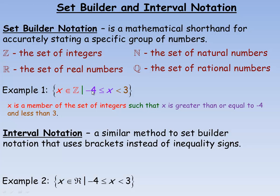After 'such that,' it's written: negative 4 is less than or equal to X, which is the same as saying X is greater than or equal to negative 4. X is between two numbers — greater than or equal to negative 4 and less than 3. Since we're talking about integers, that means the integers negative 4, negative 3, negative 2, negative 1, 0, 1, and 2 — since 2 is the highest integer less than 3.